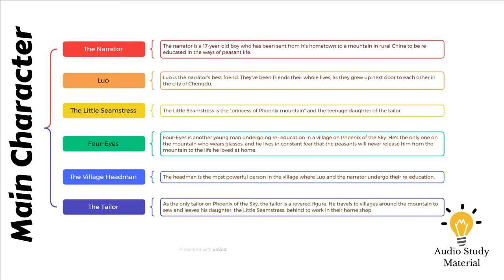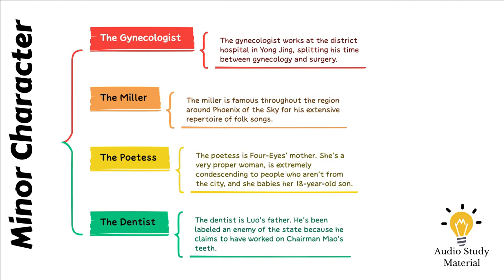Luo and the narrator devise a master key to pick the Four Eyes lock, with the intention of stealing the books at the village's festive meal. They discover a briefcase containing translated western novels. When they attempt to exit through the window, it is locked. They hide under the beds upon hearing the return of Four Eyes and the poetess. When Four Eyes and his mother leave, Luo and his companions steal the suitcase and flee. Four Eyes never reports his books as missing.